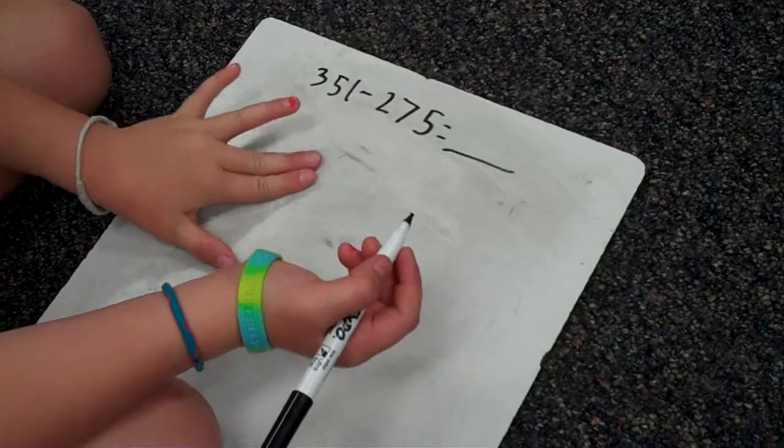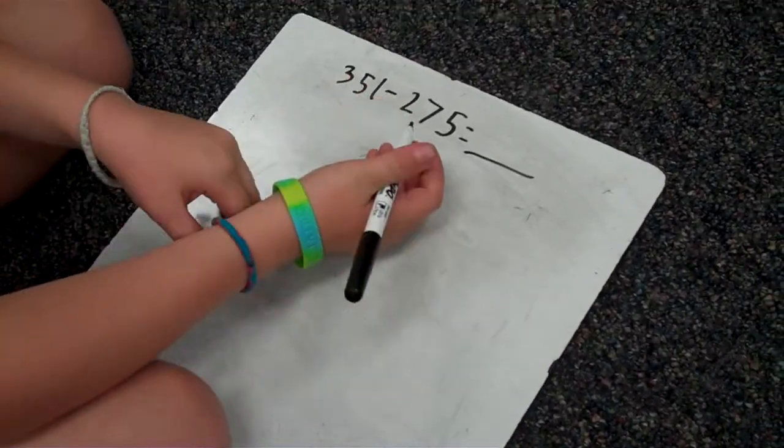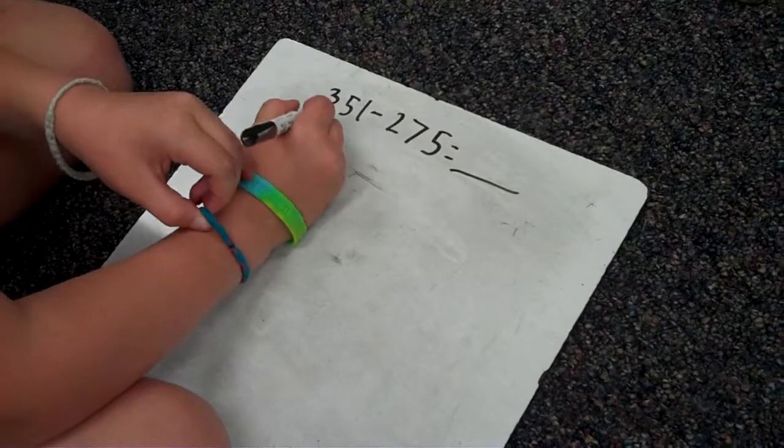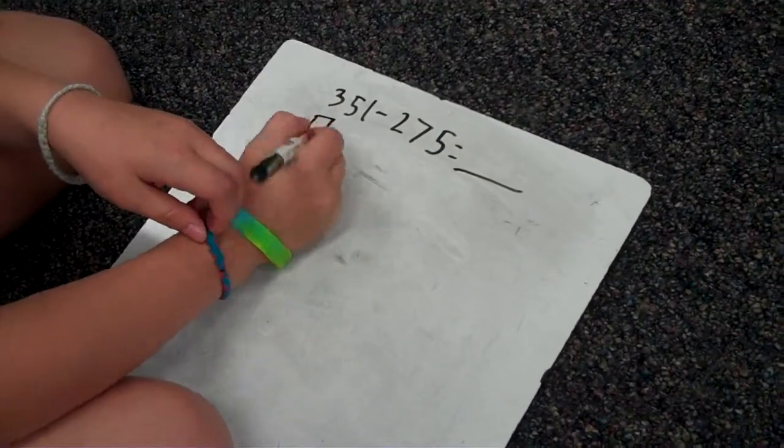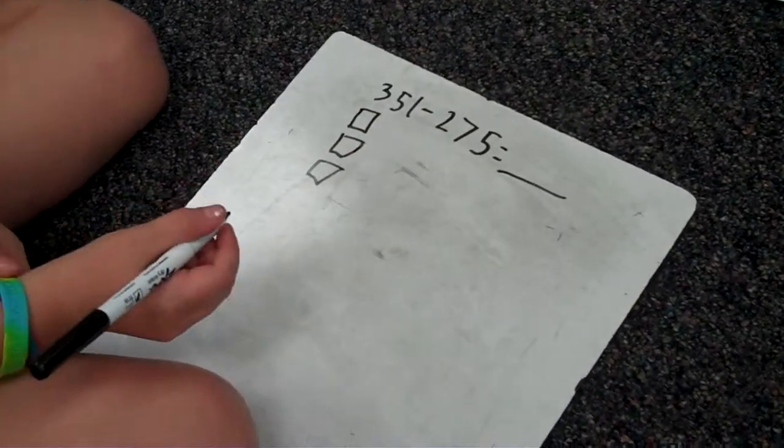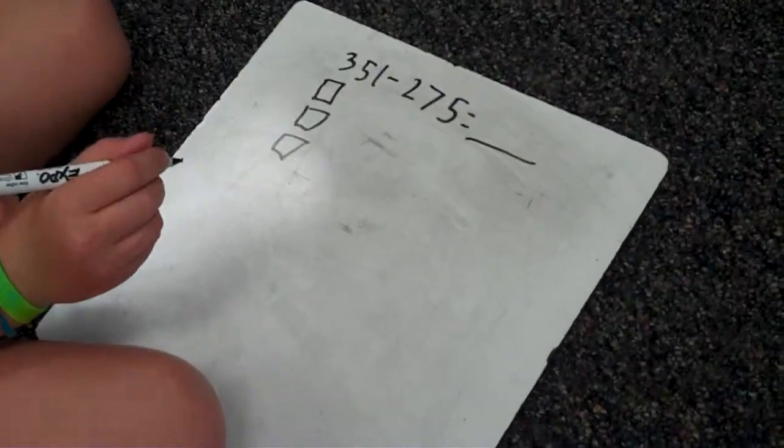Now that you're on subtraction, you don't write the other number that you're subtracting because you only subtract that number with it. So you only draw base 10 blocks for one number? Yeah. And why is that? Because you take away from it.